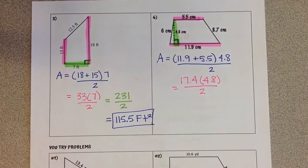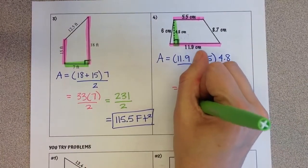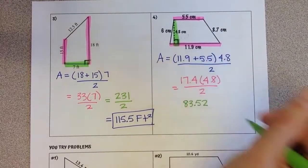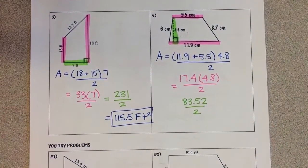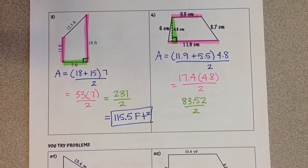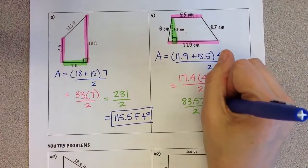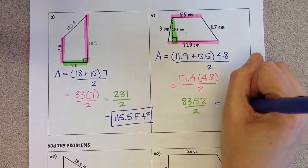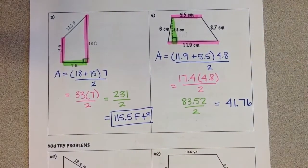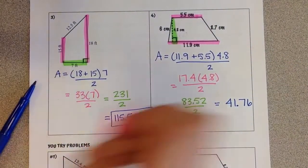17.4 times 4.8 gives us 83.52, divided by 2, gives me an answer of 41.76. On the front it said to round to the nearest tenth. So when I'm rounding to the nearest tenth,